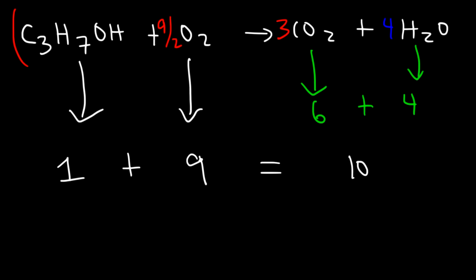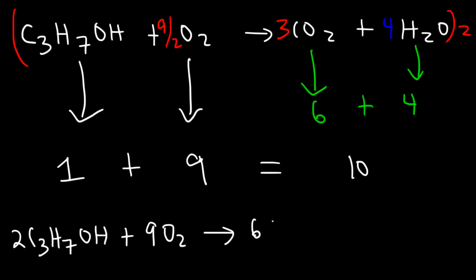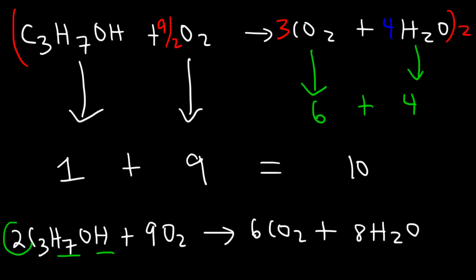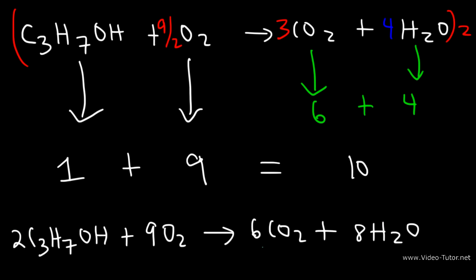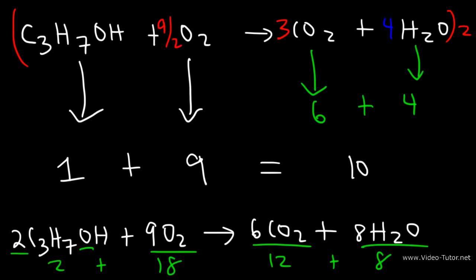We multiply everything by 2 to eliminate the fraction: 2 propanol molecules plus 9 oxygen molecules yield 6 CO₂ molecules and 8 H₂O molecules. Let's verify: 6 carbon atoms on both sides; hydrogen — 7 plus 1 is 8, times 2 is 16 on both sides; oxygen — 6 times 2 is 12, plus 8 is 20 on the right, and 9 times 2 is 18 plus 1 times 2 is 2, giving 20 on the left as well. Everything is balanced.